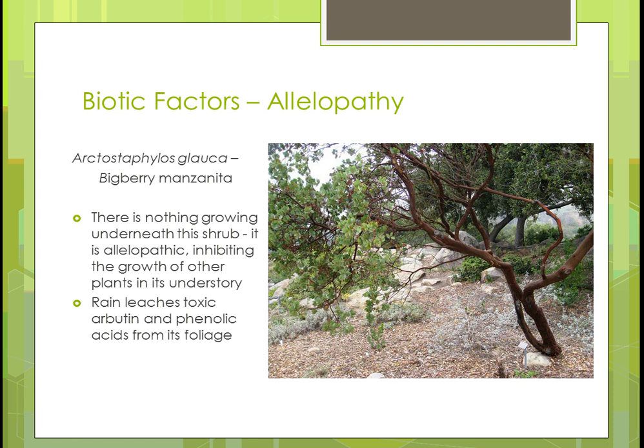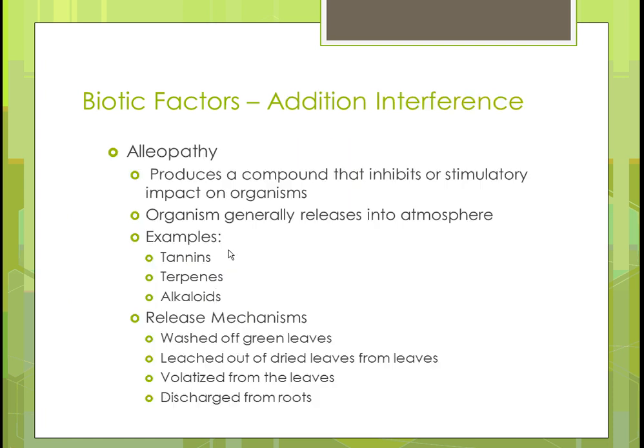It's going to keep the growth of other things from happening underneath it. Why does it want that? It wants all the nutrients it can get to itself. In this case, the rain leaches that substance from the foliage into the ground. Allelopathy produces a compound that inhibits, stimulates, or has some kind of impact on an organism. Compounds like tannins, terpenes, and alkaloids are some examples.